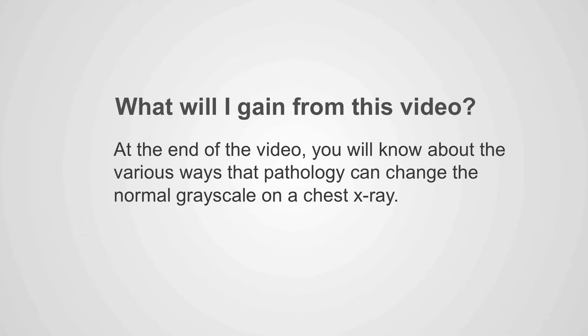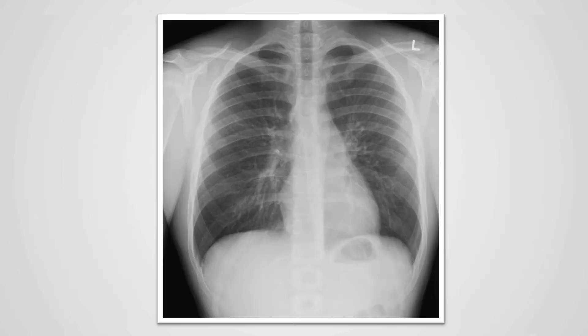What will I gain from this video? At the end of the video, you will know about the various ways that pathology can change the normal gray scale on a chest x-ray. Previously we have learned that a normal chest x-ray has a certain gray scale pattern based on tissue density, geometry, interfaces, and overlap.